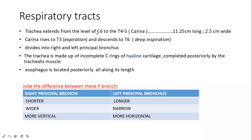The trachea extends from the level of C6, just below the thyroid cartilage, up to the T4 and T5 junction — that's at the carina. The length is 11.25 centimeters, but you can just say approximately 11 centimeters because this is just an average and there is variation in the population. It is approximately 2.5 centimeters wide.